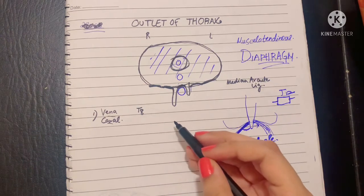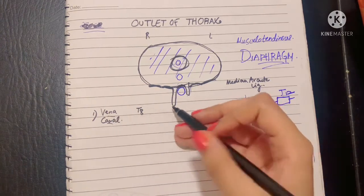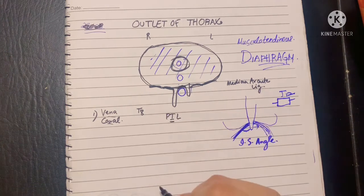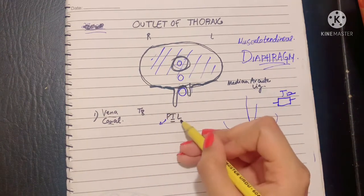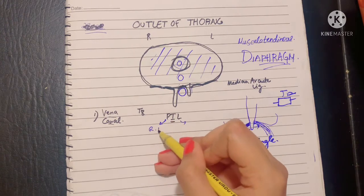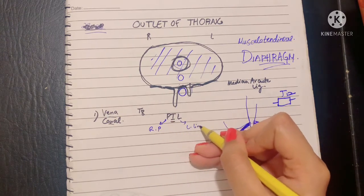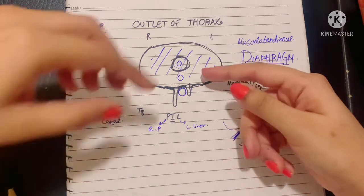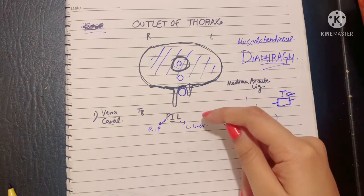The vena cava opening is quadrilateral in shape. The structures that pass through it can be remembered with the mnemonic PIL: I for inferior vena cava, P for the right phrenic nerve, and L for the lymphatics of the liver. Apart from this, when there is contraction of the diaphragm, there is dilation of this opening.